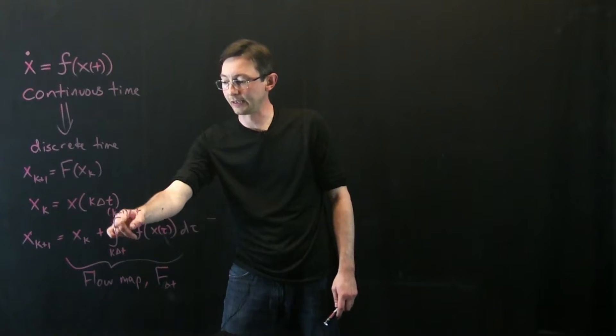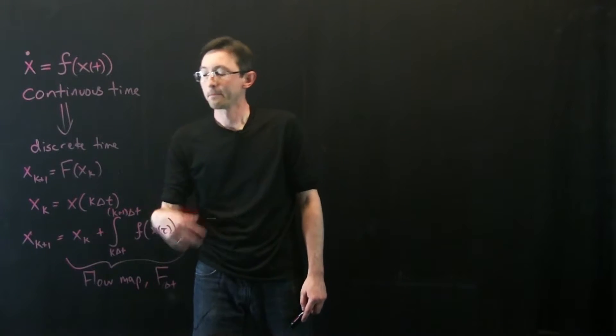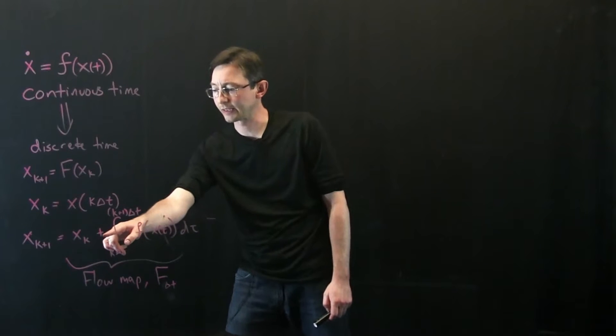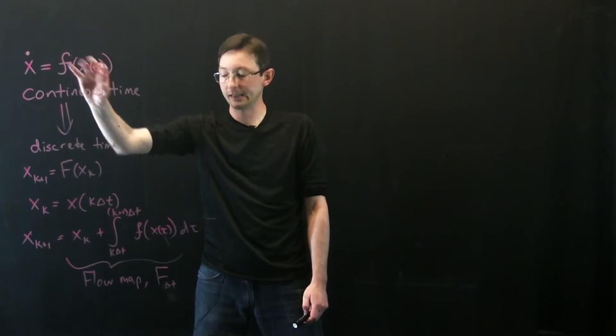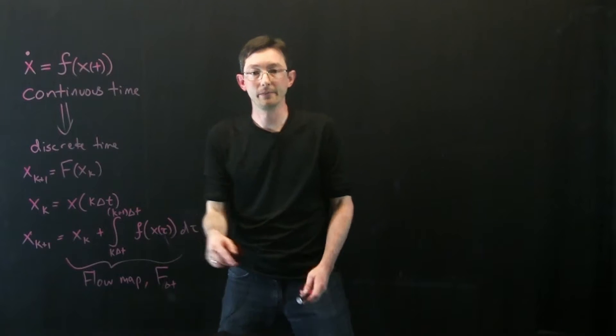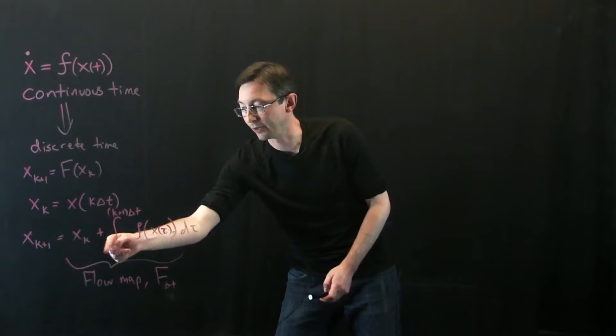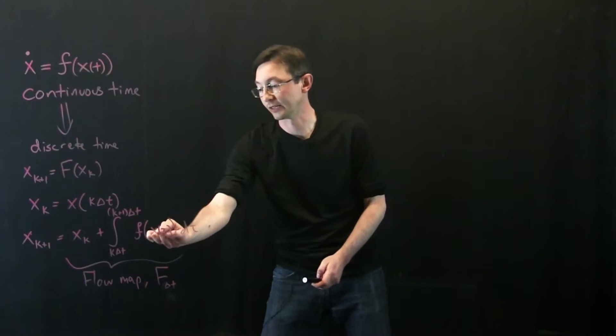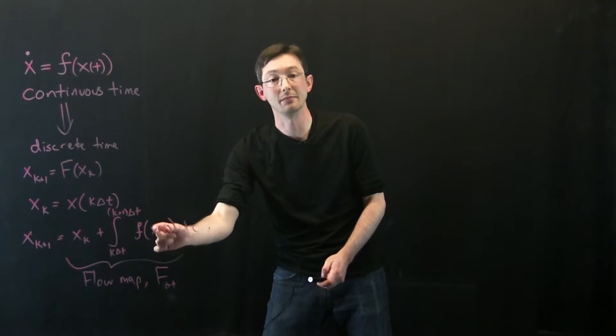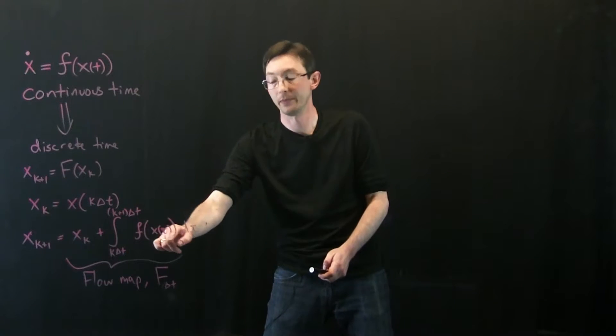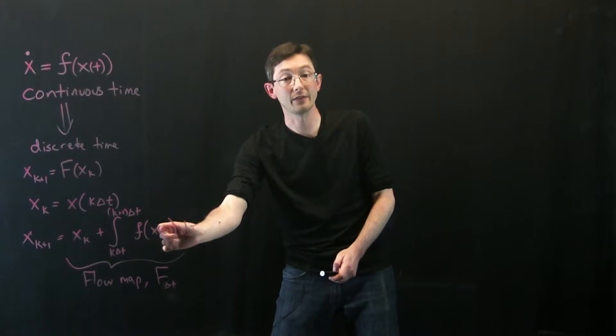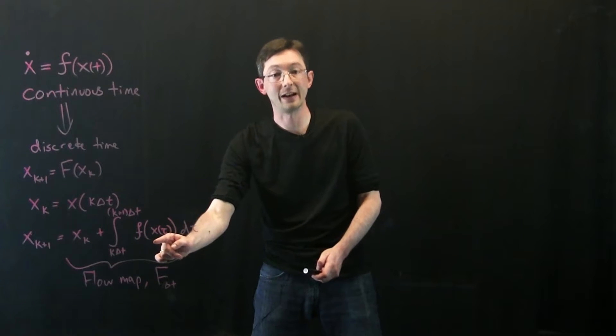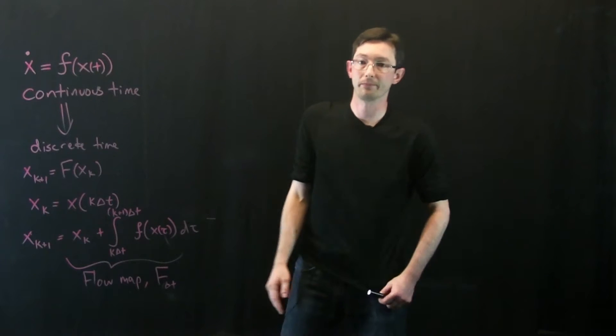And notice I have to write it as an integral. So basically I start at x k and then what this is my initial condition and then essentially I am integrating this right-hand side continuously. But as I integrate this right-hand side continuously my state x is moving along with the dynamic. So I have to keep track of where my state moves along this trajectory. So that's why I have this x of tau inside of here because as the state is moving my vector field has to be evaluated at that new location throughout this trajectory.